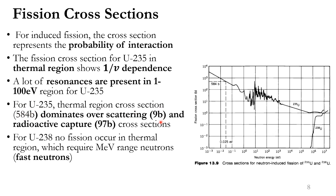The nuclear fission cross-section is much larger than the scattering and radiative capture cross-sections for uranium-235. For uranium-238, however, there is no cross-section for induced fission up to the MeV range — nuclear fission of uranium-238 requires MeV range fast neutrons. These are the peculiarities of the fission cross-section for uranium-235 and uranium-238.